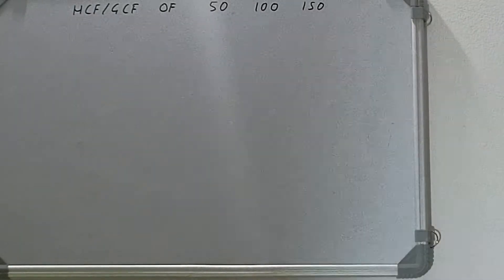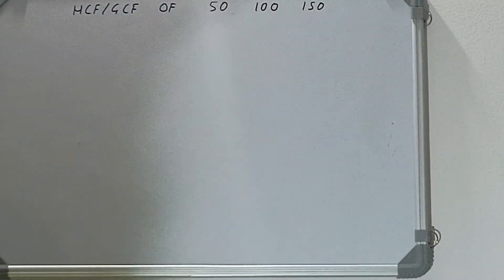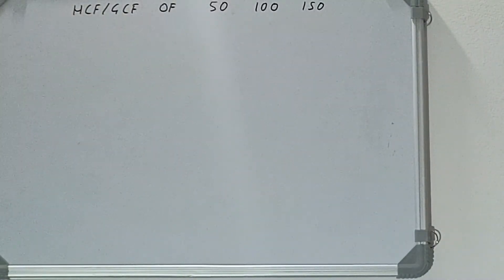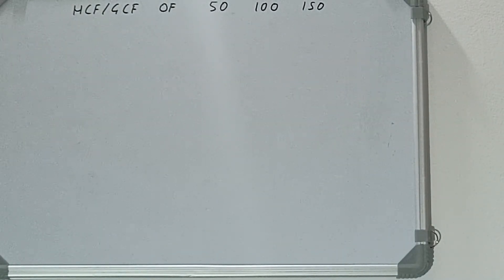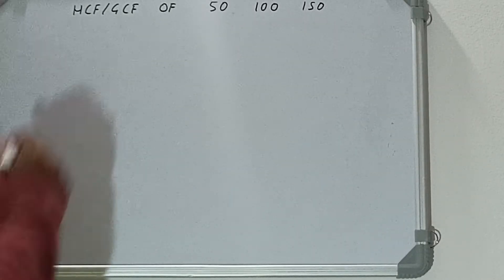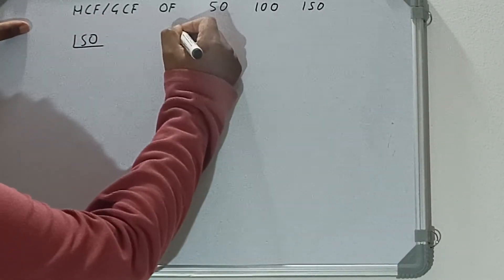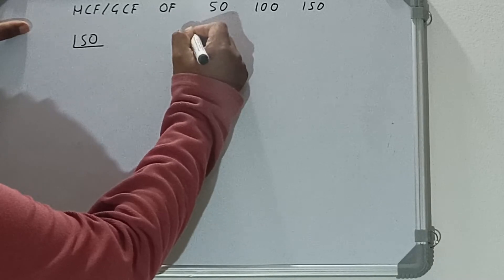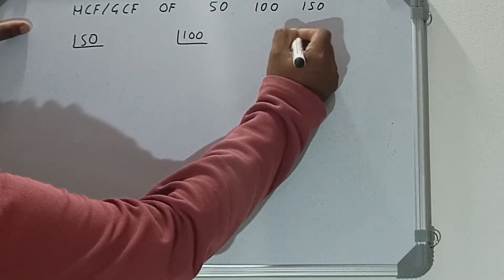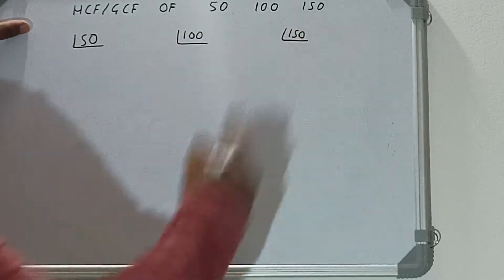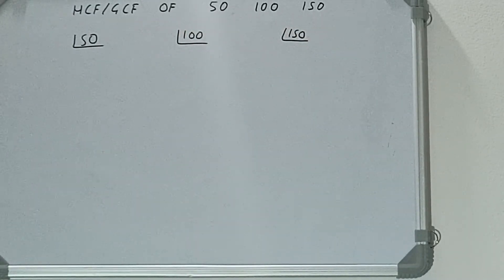Hello friends. In this video I'll be helping you with the HCF, or GCF, of the numbers 50, 100, and 150. So let's start. The first step is to prime factorize each of the numbers separately — first we'll do 50, then 100, and then 150.